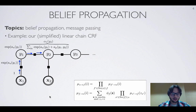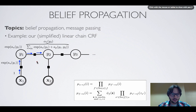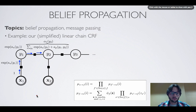Notice that this corresponds to the initial value of the first column in the computation of the alpha table in the forward-backward algorithm. So we're starting to recover pieces of the forward-backward algorithm.